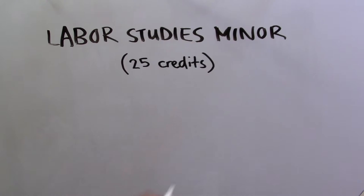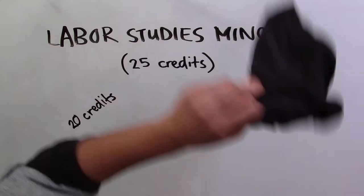One way to get involved with our center is through the labor studies minor which you can earn in just 25 credits. The minor includes one introductory course and four elective courses for just 20 elective credits.